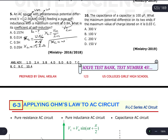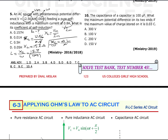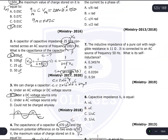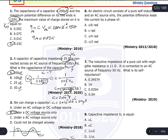Now using the equation X_L = ω·L, we solve for L: L = X_L / ω = 15.7 / (100π). Using the calculator: 15.7 divided by (100 × 3.14) gives 0.05. So L = 0.05 henry.